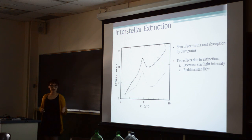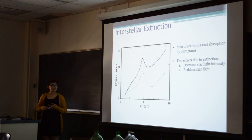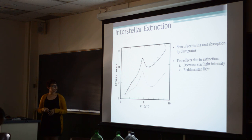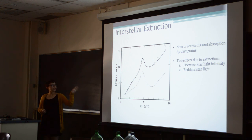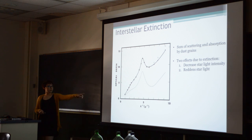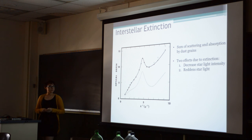Interstellar dust is the main source of cosmic extinction, which is either a decrease in the intensity of starlight or reddening of starlight. It happens in two ways: the dust can scatter the light in different directions, or it absorbs the light. In this particular extinction curve, the dotted line shows the absorption part of the dust extinction, and the solid line is the total extinction due to both scattering and absorption. We can see that shorter wavelengths — particularly UV — are more affected by dust absorption.